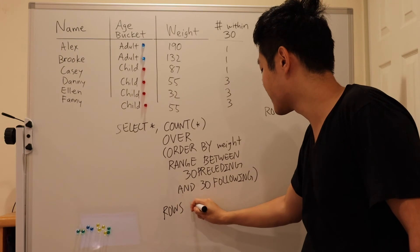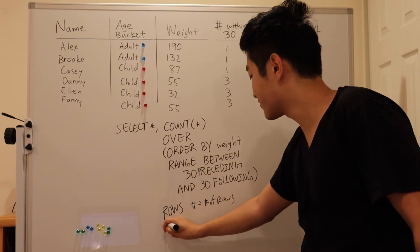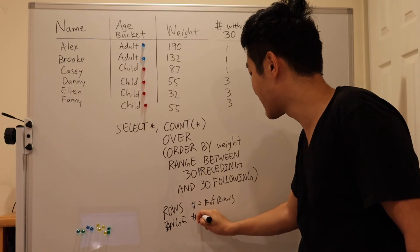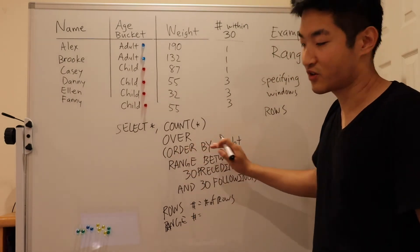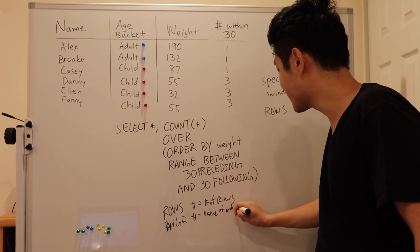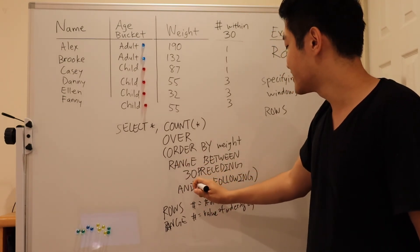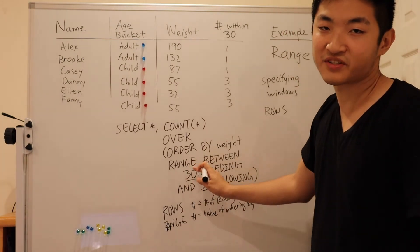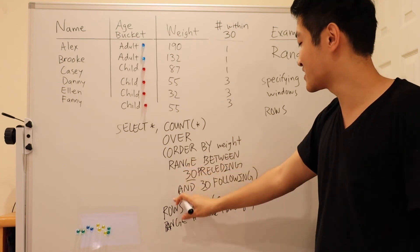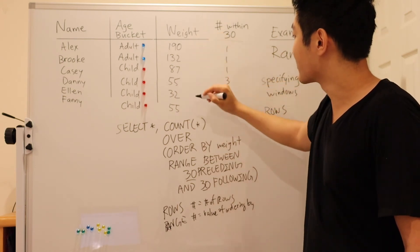With rows, the number equals to the number of rows. And then for range, this number corresponds to the value of what you're ordering by. So that is why ordering by is required for a range because otherwise, SQL has no idea how to interpret the numbers that you provide over there. And so this is an example of using the range keyword instead of the rows keyword to describe what you want to do for your window size.